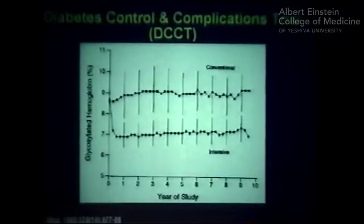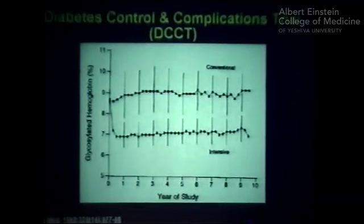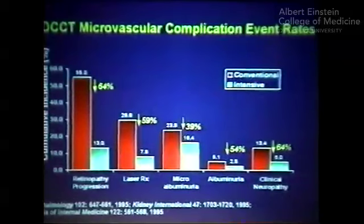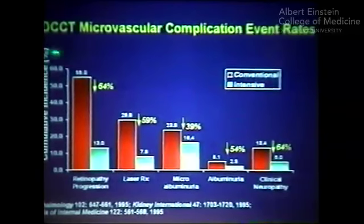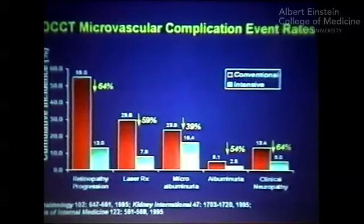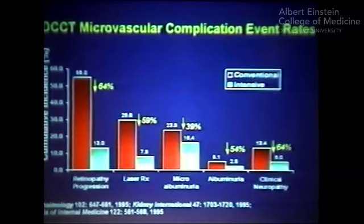This intervention was very effective in achieving better glucose control, with a clear separation in hemoglobin A1C levels between the intensive and conventional groups for the duration of the main study. The intensive group didn't quite achieve 6%, but there was a substantial difference. The main results of the DCCT are well known: intensive management led to a dramatic reduction in the risk of microvascular complications — 64% reduction in retinopathy progression, almost 60% reduction in the need for laser therapy, and reductions in albuminuria and clinical neuropathy. A great success with a very clear message.